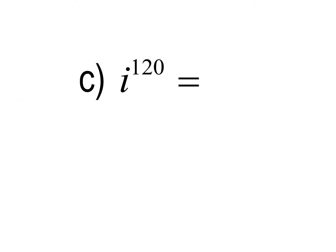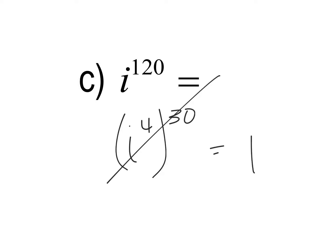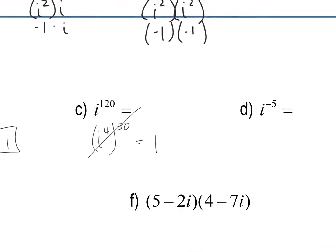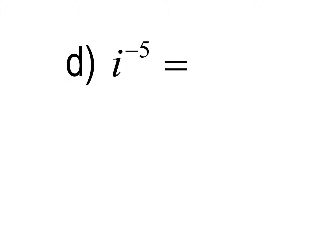For i to the 120th: four times 30 is exactly 120 with nothing left over, so i to the fourth to the 30th is just 1 — because i to the fourth is 1, and 1 to the 30th is still 1. So i to the 120th equals 1.